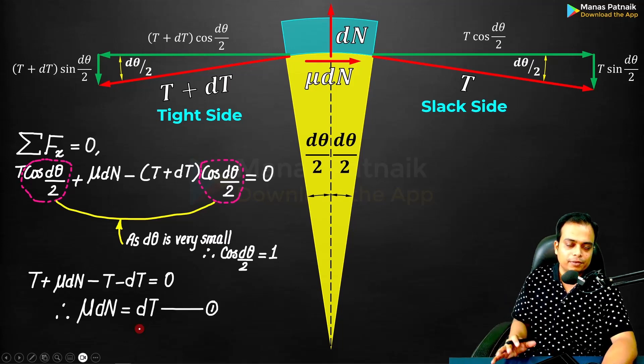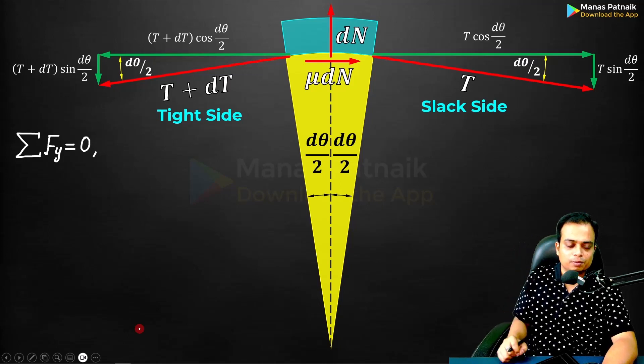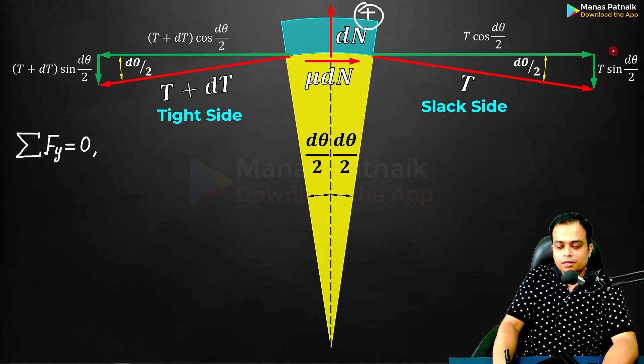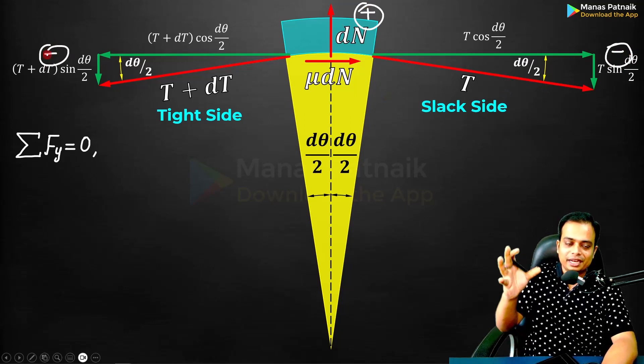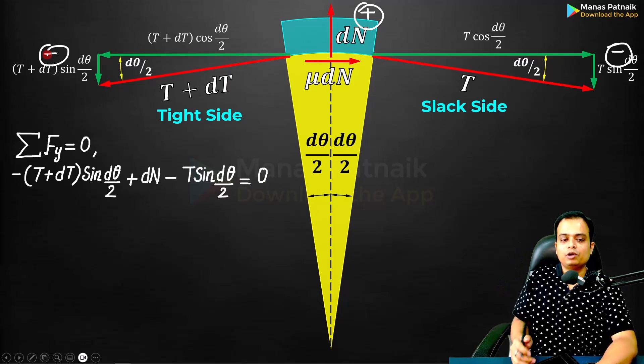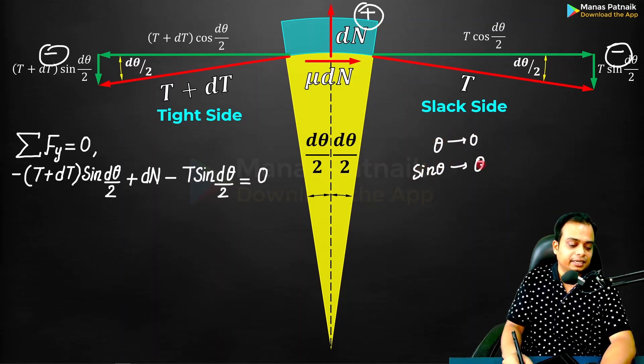T and T will cancel each other out. What's left is this, and we are going to call it equation number one. Now let's apply summation Fy = 0. dN is upwards positive. These two forces—T sin(dθ/2) and this over here—are downwards negative. Let me write them down.